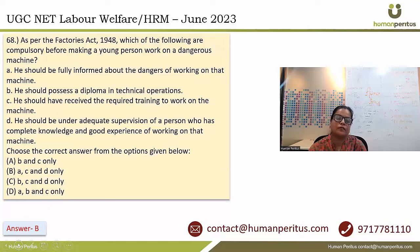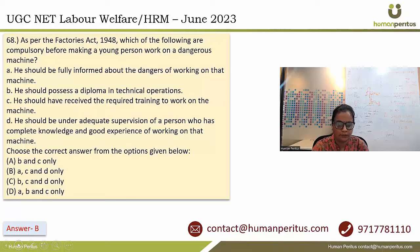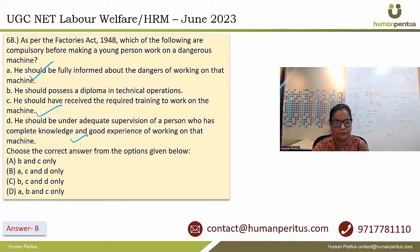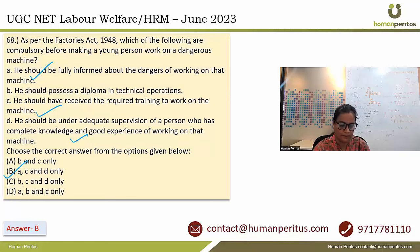As per the Factories Act 1948, which are compulsory before making a young person work on a dangerous machine? He should be fully informed about the dangers of the work, he should have received training, and he should be under adequate supervision of a person with complete knowledge and good experience of the working. So A, C and D is the correct answer — option B.